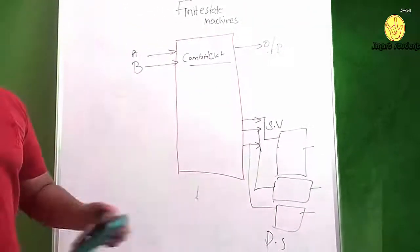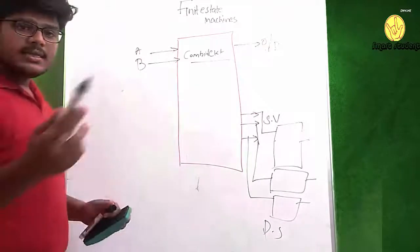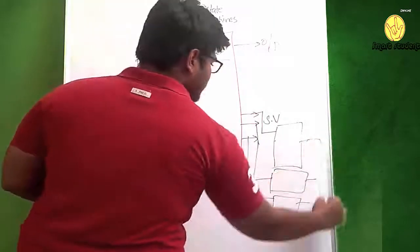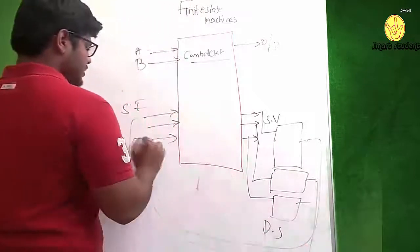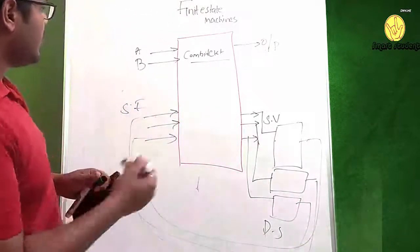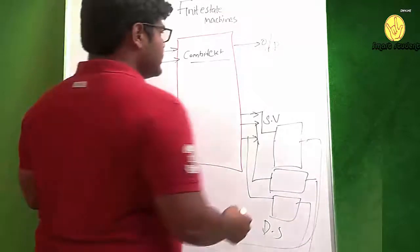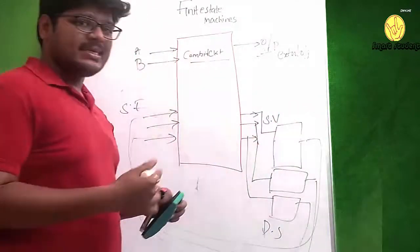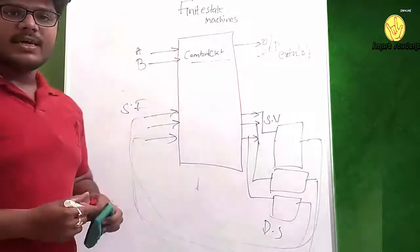In order to calculate the next state, we need another set of inputs. These are state inputs, and the output of the previous state will be given to the state inputs in order to get the outputs. These outputs are called external outputs, and these outputs are state variables or state outputs. This is a generalized diagram of the finite state machine.